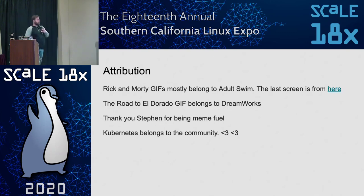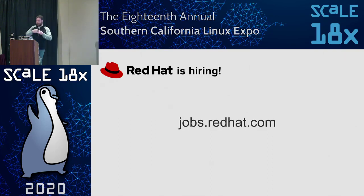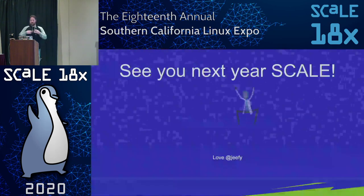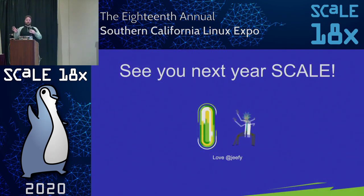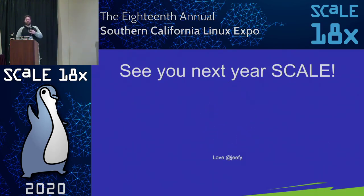Rick and Morty belongs to Adult Swim. The Road to El Dorado belongs to DreamWorks. Steven is absolute meme fuel and everyone in the Kubernetes community loves him. I get to do cool stuff at Red Hat, so I have to shout them out — thank you for letting me be part of the community on their time. Hopefully I'll see you next year. That was 16 minutes — I figured I'd do at least 20. Thank you.